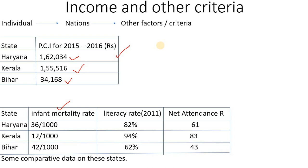In Bihar, this is the infant mortality rate. In this case, the infant mortality rate is reduced in developed states, making it a key indicator of development.